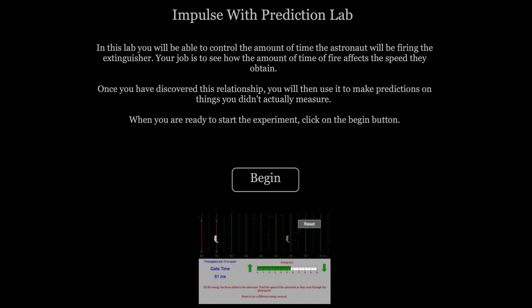In this lab, students will explore the factors that affect impulse and momentum. We're going to use the relationship we discover to find the thrust of a fire extinguisher and make predictions on things we didn't measure.